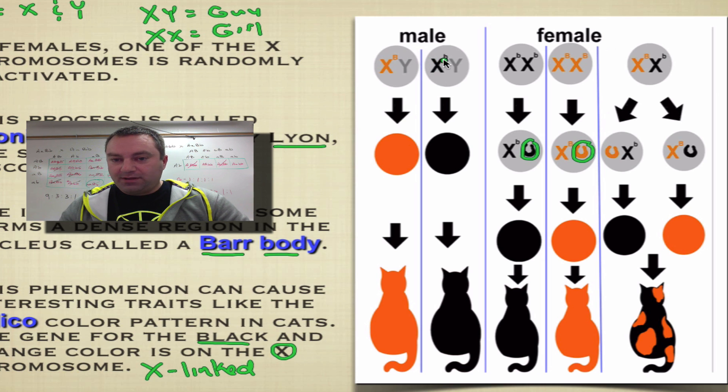Here we've got a male cat who has the little b allele. And what do you know, with the little b allele being the one for black, he's going to have black fur.